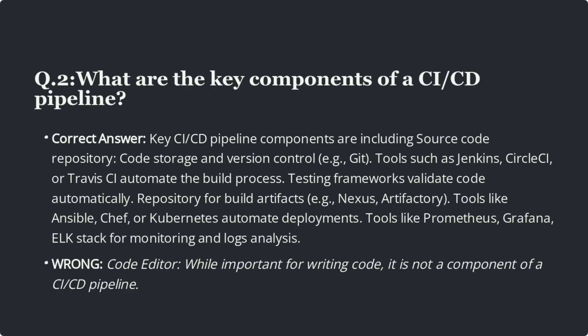Question 2: What are the key components of a CI/CD pipeline? The correct answer is that key CI/CD pipeline components include a source code repository for code storage and version control, e.g. Git. Tools such as Jenkins, CircleCI, or Travis CI automate the build process.